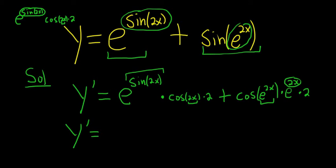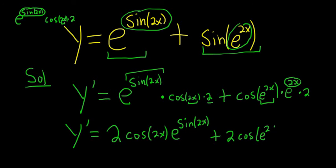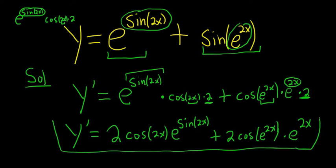So maybe the last thing you can do is put the numbers in the front. So this is 2 cosine 2x times e to the sine 2x plus 2 cosine e to the 2x times e to the 2x. Just rewriting it and putting the 2s in the front. And that's the final answer.